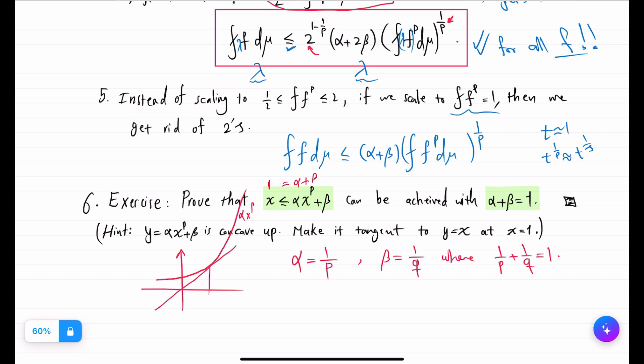There will be this concave up function α x to the p plus β. And also you can see from this proof why this α, why 1 over p and 1 over q naturally come in. The slope has to be 1. Derivative of that concave function is α p x to p minus 1. And when you set x equal to 1, it's α p, and that should be 1 because it's tangent to y equals x, and therefore α is 1 over p.